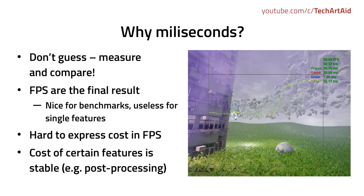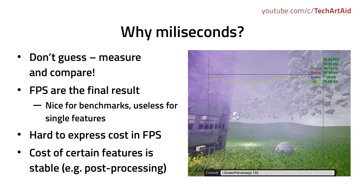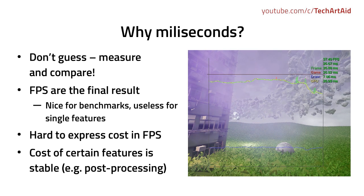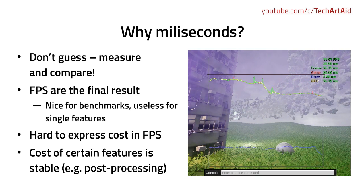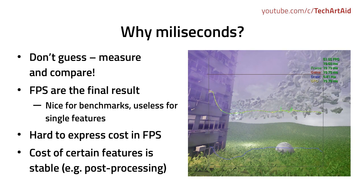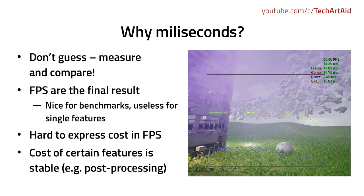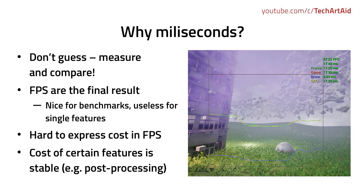So why milliseconds? This is the most important question for this tutorial — why we should use milliseconds? Basically it comes to this: you have to measure and compare your results, for example when checking if your changes affected the scene in a positive or negative way. And it's very hard to compare certain specific features in FPS.